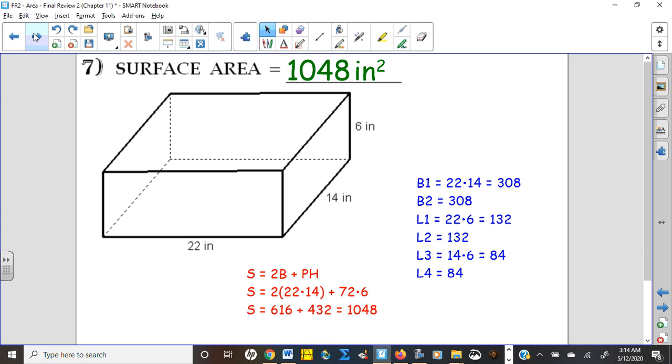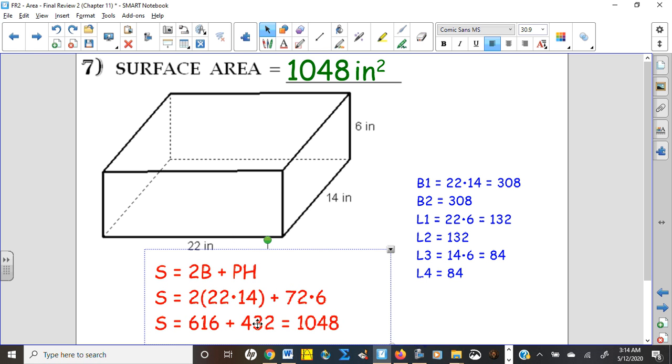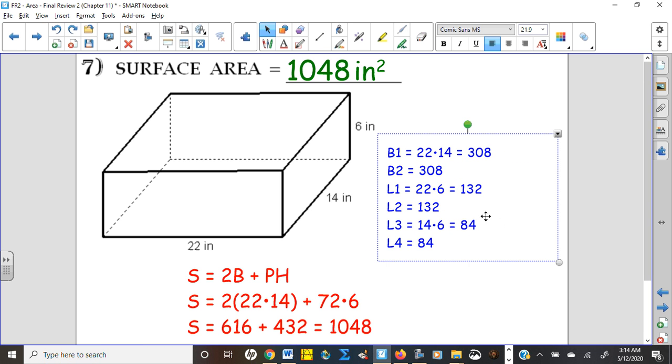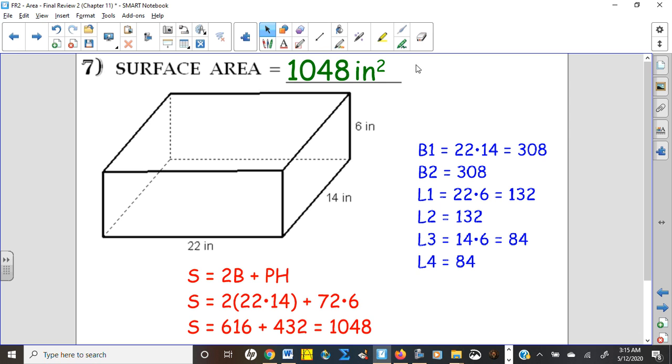Number seven, another surface area problem, really would fit better in chapter 12. But here's the two methods again: the book method that has this formula, two bases plus the perimeter times the height. Here's the other way where we know we have the total of six surfaces, and so we just kind of find them individually. And if I added, you know, these values together, bam bam bam bam bam, those would add up to the same total, 1048 in this case, square inches.